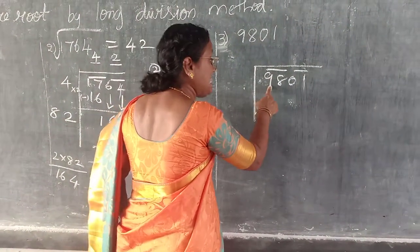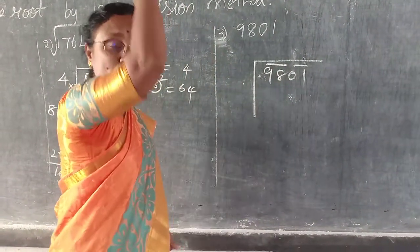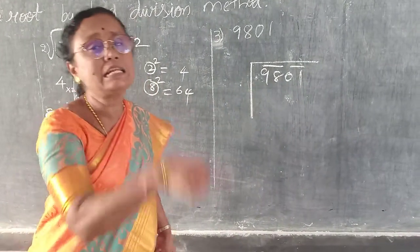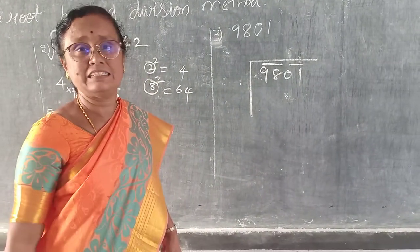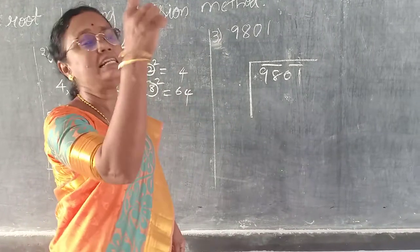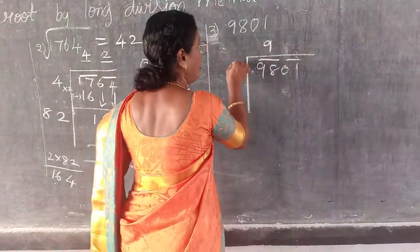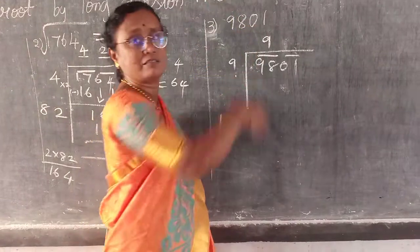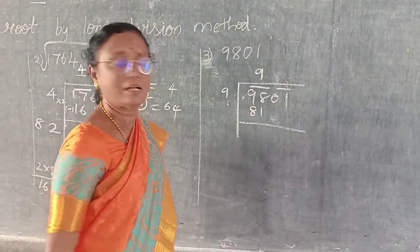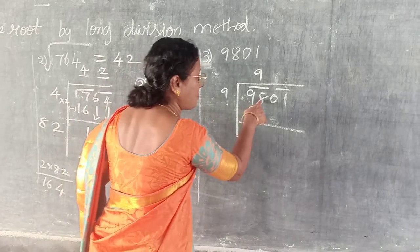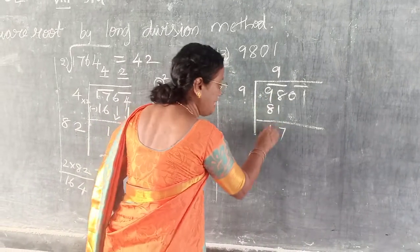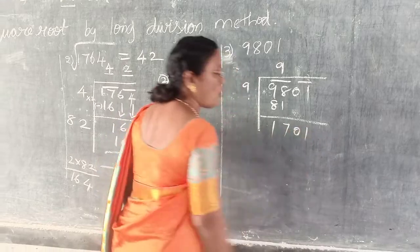What is 98? Don't start from 1 — 98 is nearer to 100. 10 10's are 100, so the previous is 9 times are 81. Don't start from 1. So 9 9's are 81. From this you have to subtract: 8 minus 1 is 7, 9 minus 8 is 1. Remainder is 17 — bring it as 1 7.